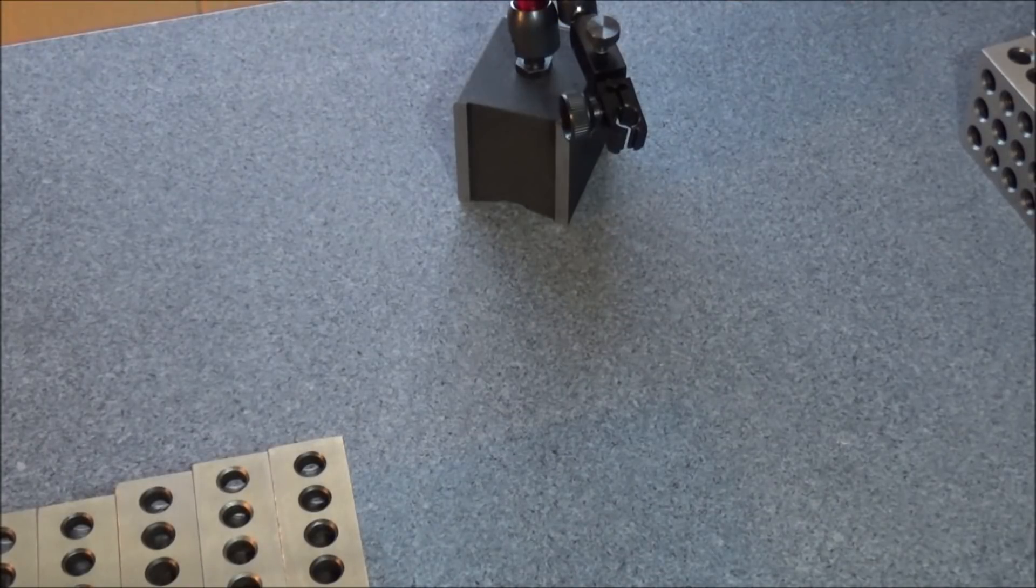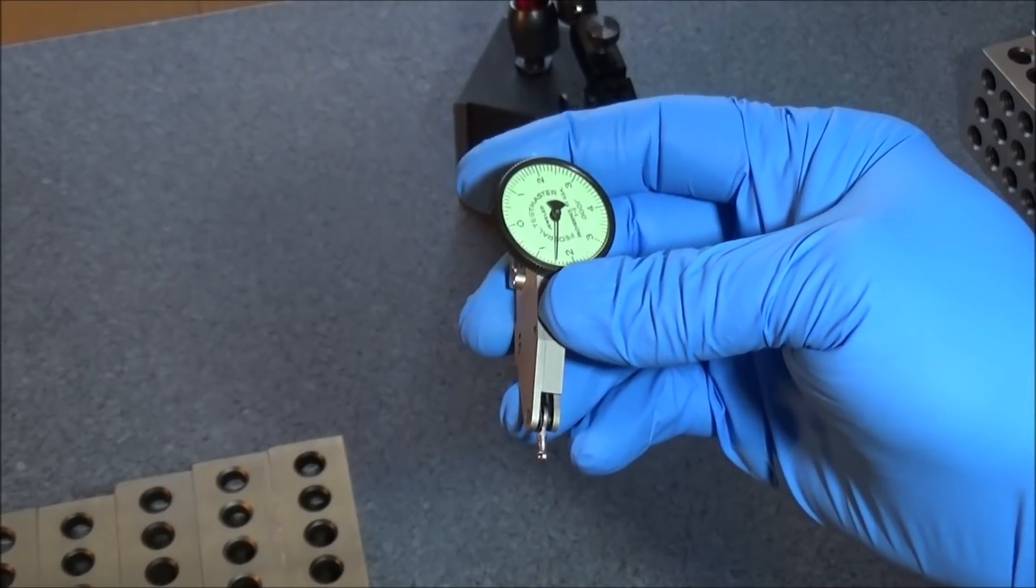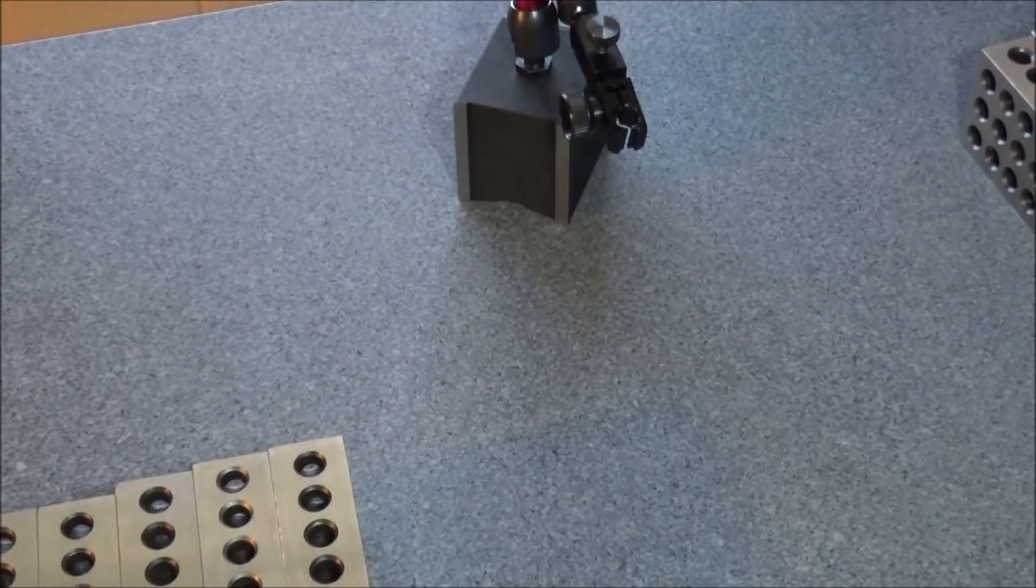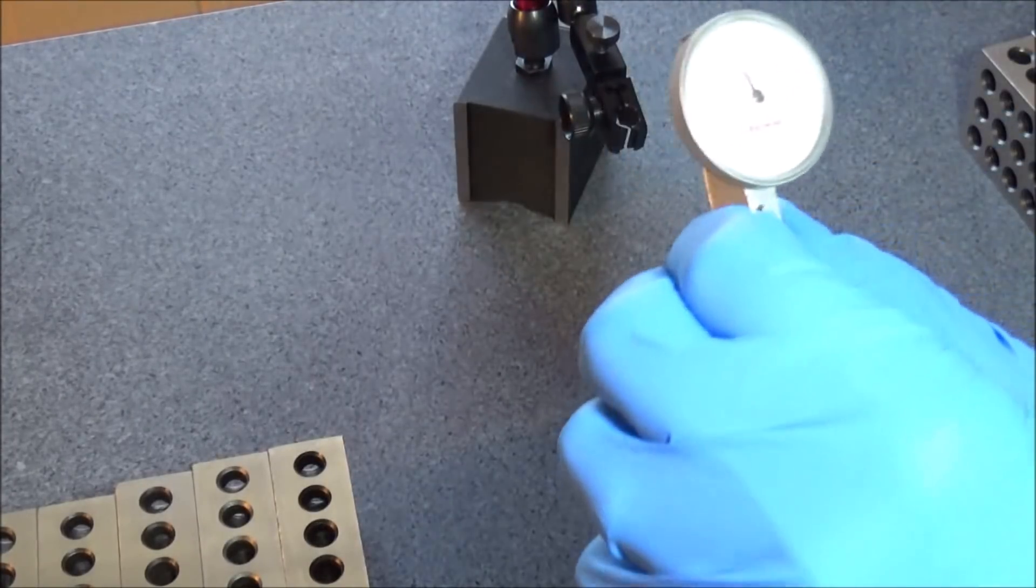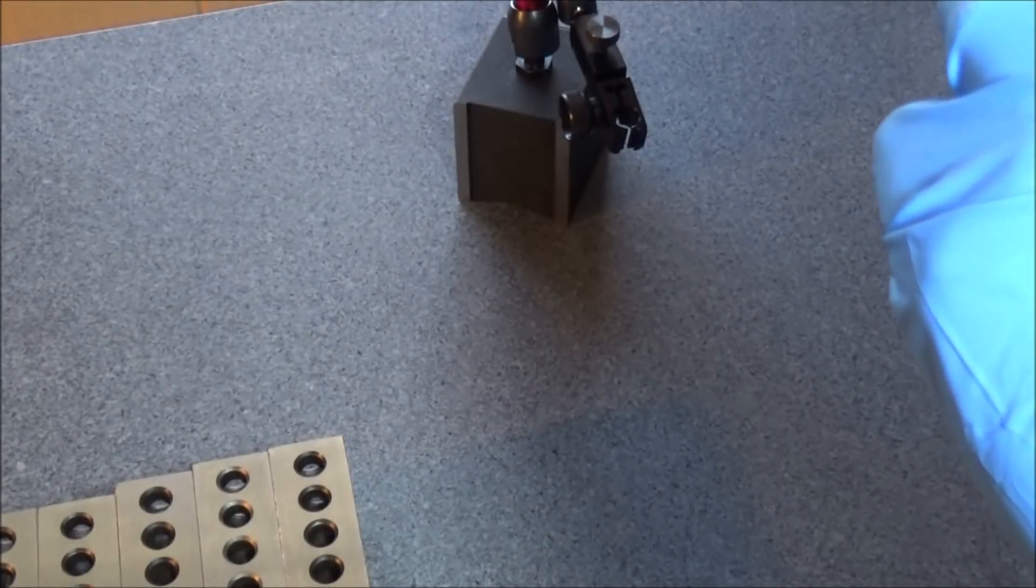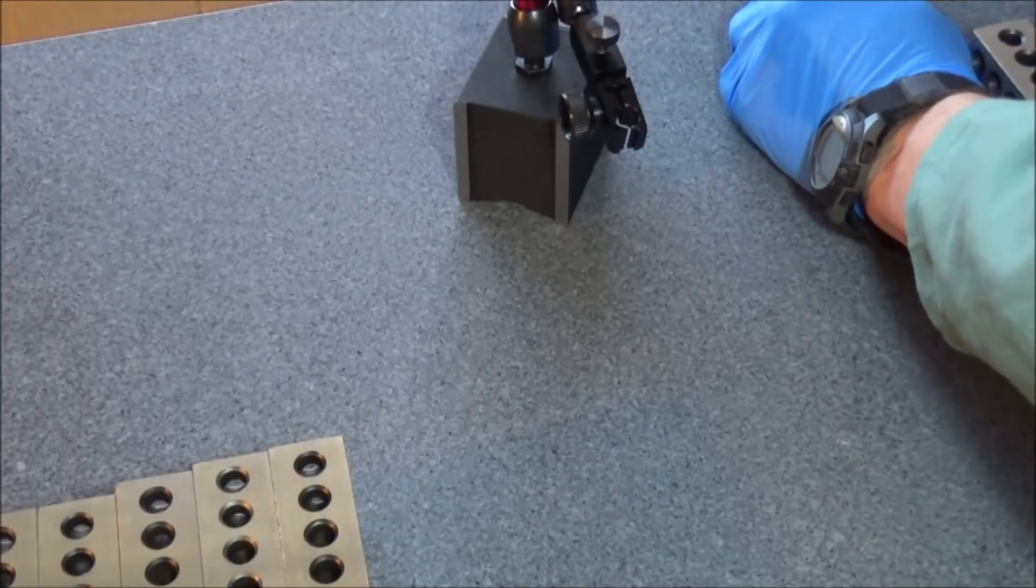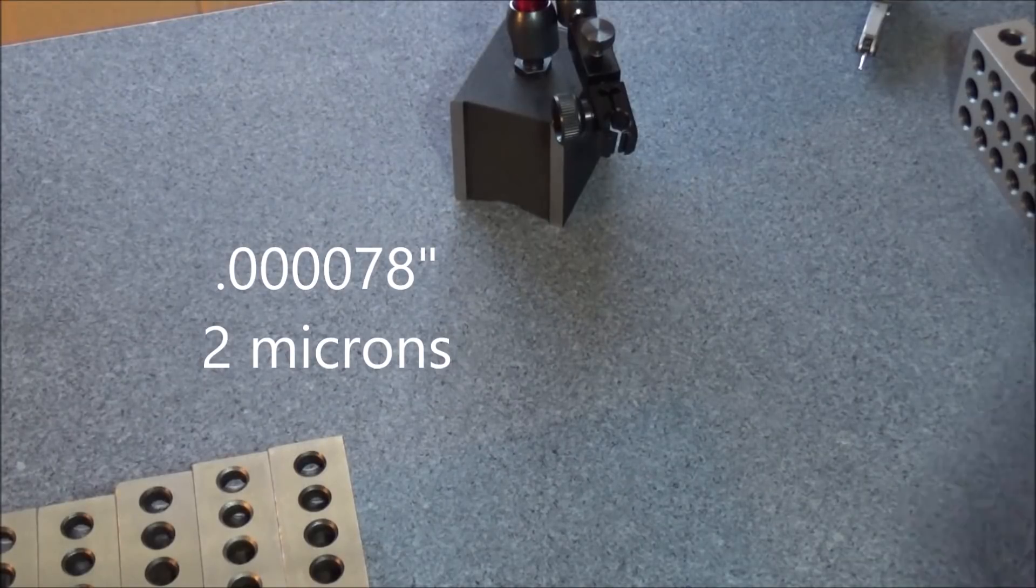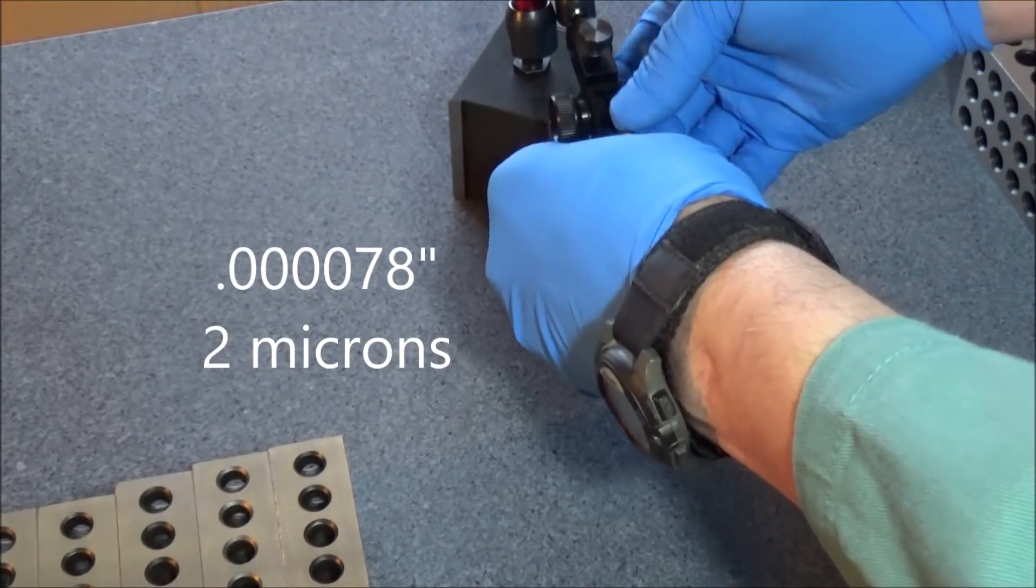Now this is the indicator that I was using to check all of my ways. This one is a tenth of an inch. But I have one that I just recently picked up that is 2 microns, 0.002 millimeters, which is about 78 millionths. But let's use this tenth indicator I have here.